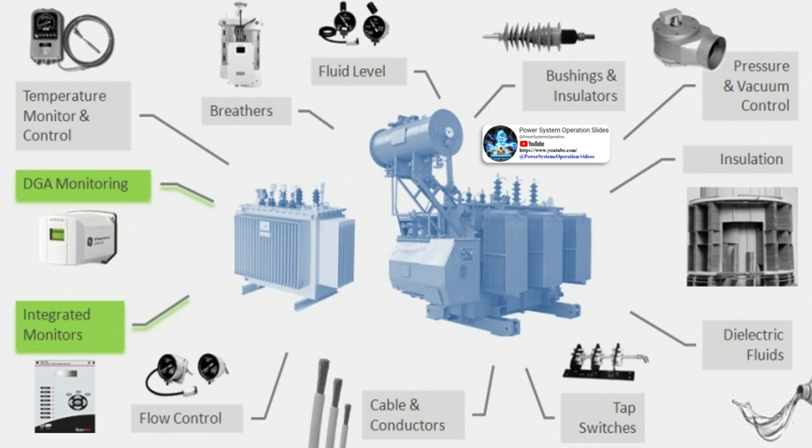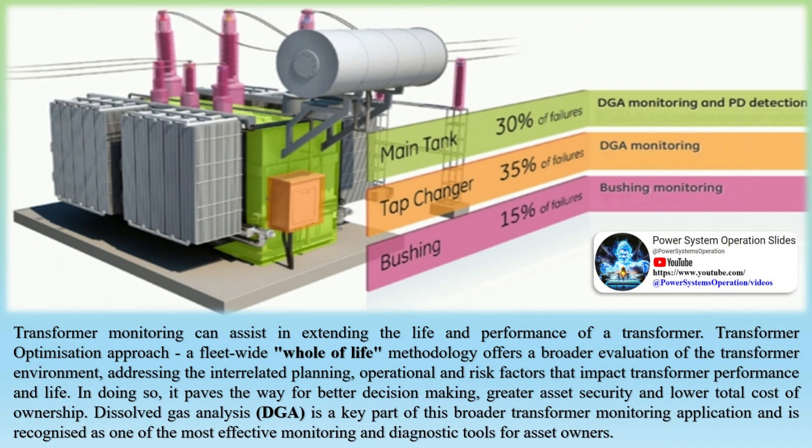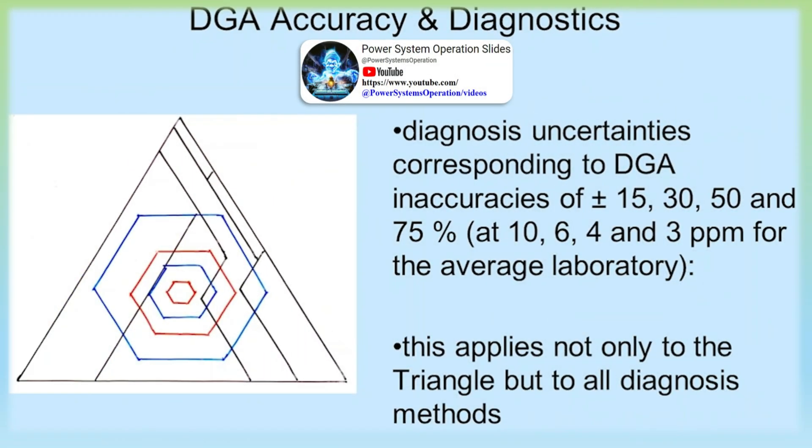Most transformer owners rely on DGA via annual lab sampling, while others utilize online DGA devices on problem assets or larger power transformers. The value of DGA is accepted as a means of periodic checks on transformer condition or post-mortem evaluation. However, the widespread use of online DGA monitoring across an entire fleet is where the true value lies — not in post-mortem, but in prevention and management, helping to maximize asset availability and security while minimizing premature aging and catastrophic failures.